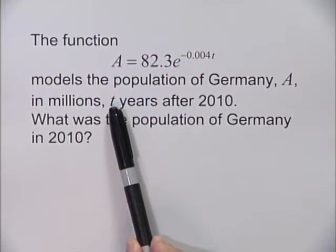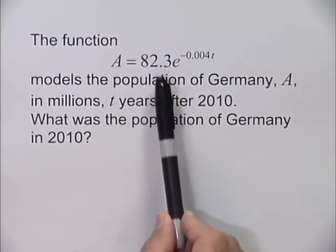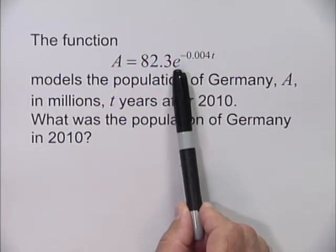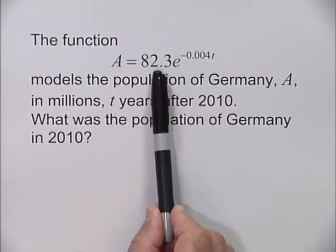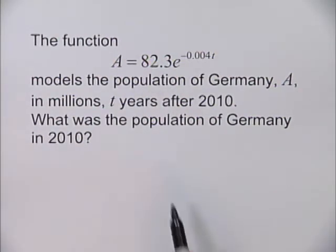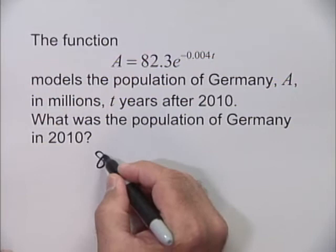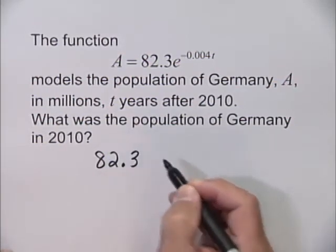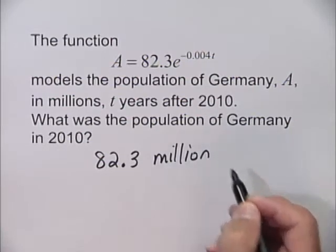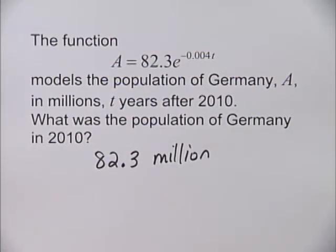We know from the model that the value in front of the expression involving e is the population at time t equals 0. That means the population in 2010 was 82.3 million.